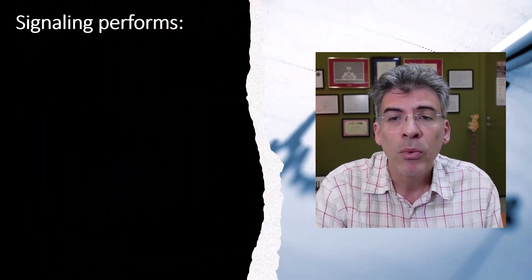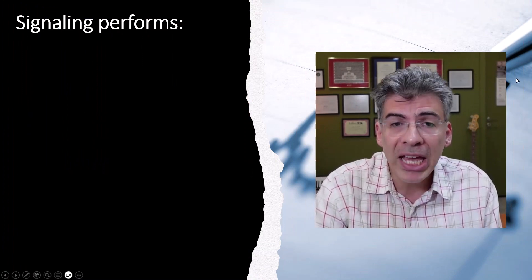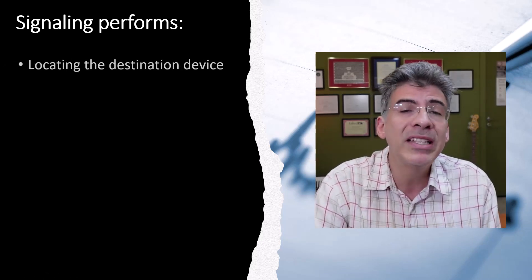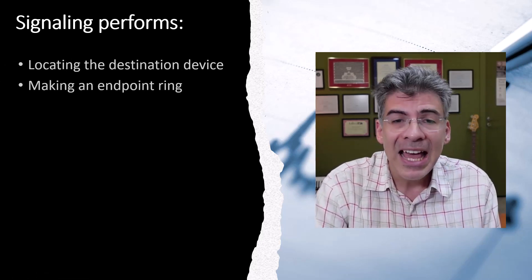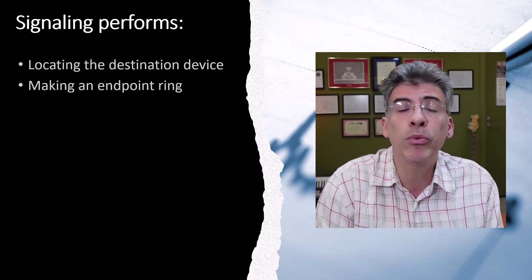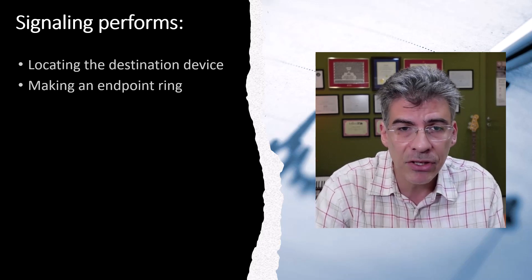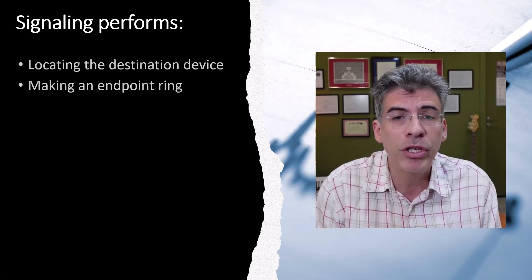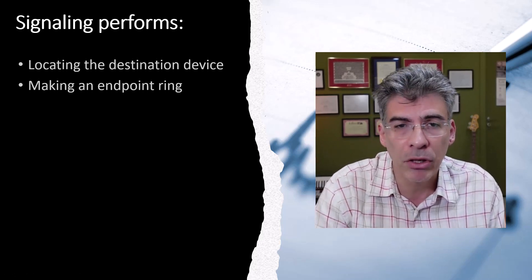Signaling performs many of the things we take for granted when we make a phone call. This includes locating and identifying the destination device when we dial a phone number, making the endpoint we're calling actually ring so the person on the other end can answer, and sending audio tones to users, like the busy tone, the ringback tone, and call waiting tones.